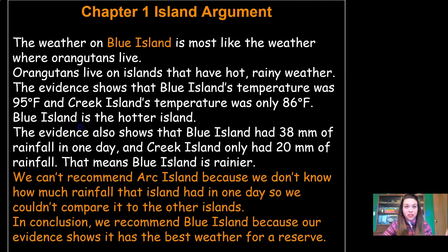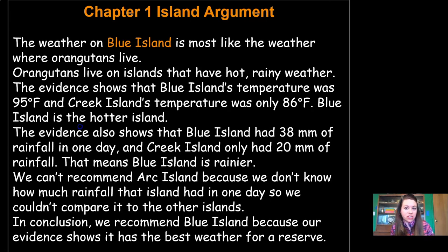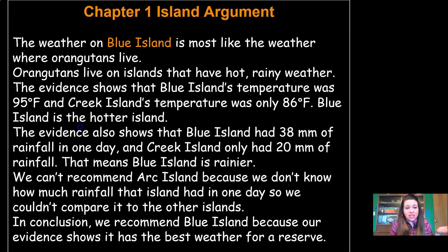We've just written our first argument together. Are you ready to hear it all together? Let me know if I've forgotten anything. The weather on Blue Island is most like the weather where orangutans live. Orangutans live on islands that have hot, rainy weather. The evidence shows that Blue Island's temperature was 95 degrees Fahrenheit and Creek Island's temperature was only 86 degrees Fahrenheit. Blue Island is the hotter island. The evidence also shows that Blue Island had 38 millimeters of rainfall in one day and Creek Island only had 20 millimeters of rainfall. That means Blue Island is rainier. We can't recommend Arc Island because we don't know how much rainfall that island had in one day, so we couldn't compare it to the other islands. In conclusion, we recommend Blue Island because our evidence shows it has the best weather for a reserve.